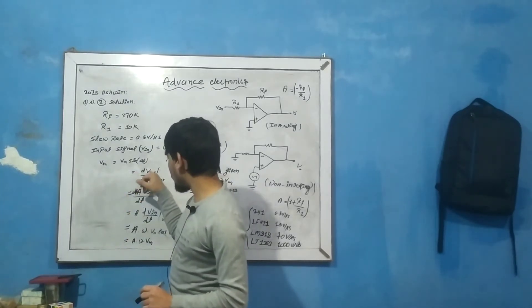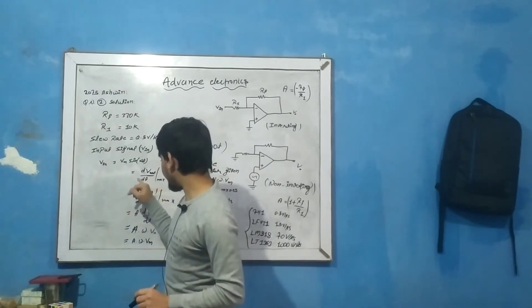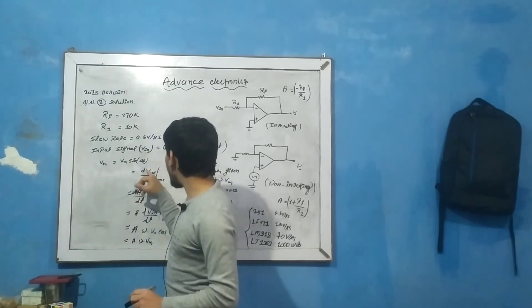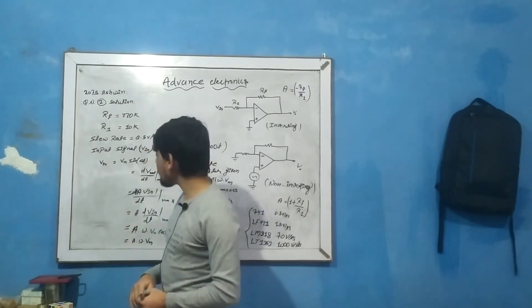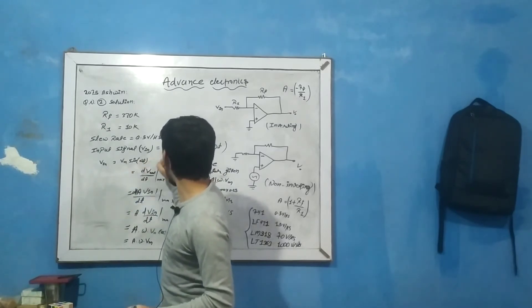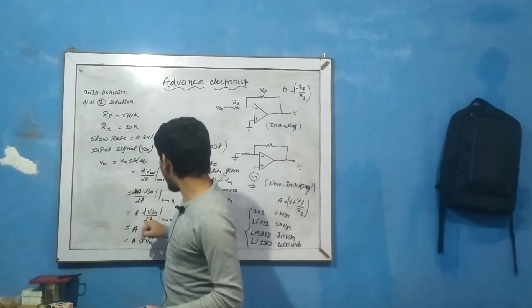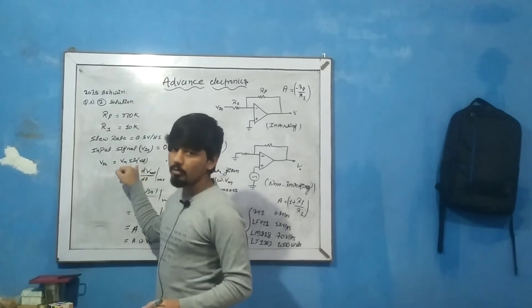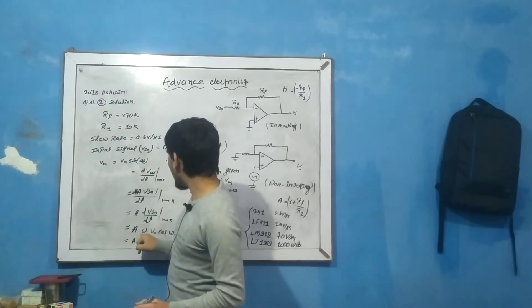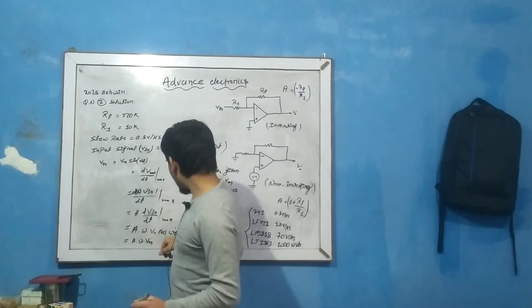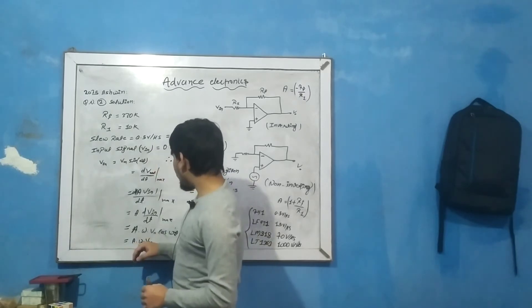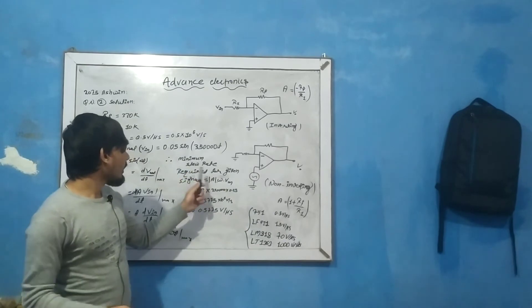The minimum slew rate is defined as the derivative of output voltage with respect to time: dvout/dt. The output voltage is gain times input voltage, so vout = A × vm sin(ωt). Taking the derivative: dvout/dt = A × vm × ω cos(ωt). The maximum value of cos(ωt) is 1, so the minimum slew rate required = A × ω × vm.